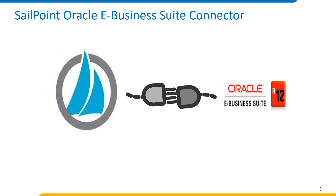SailPoint provides an out-of-the-box eBusiness Suite connector to connect to Oracle EBS. The connector supports EBS versions 12.2.X and 12.1.X. We can use the connector to integrate Oracle eBusiness Suite HRMS as a trusted source — that is, the target system is the authoritative source of identity data for SailPoint. The connector controls activities related to accounts and groups, manages responsibility and role entities of Oracle EBS, and automates access rights management, security and provisioning of IT resources.